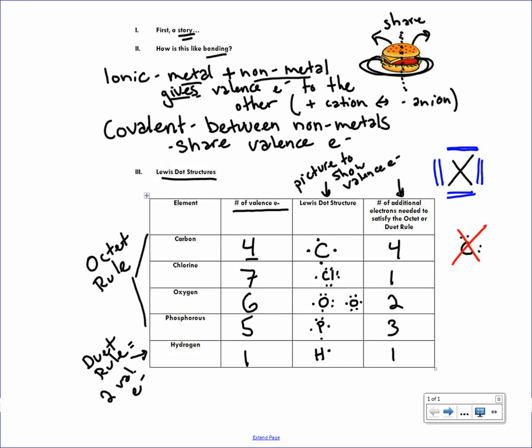So again, this is Lewis dot structures. And what we're going to learn in class next is how these are going to help us figure out how covalent bonding happens. Remember, we've mastered ionic at this point, metals and nonmetals. Covalent is going to help us figure out what happens between nonmetals when they share.